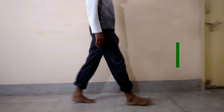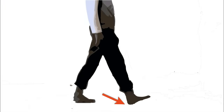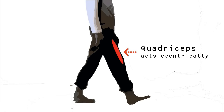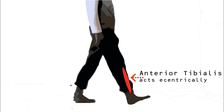Heel strike is the first component of stance phase, when the heel strikes the ground. During heel strike, there are two possibilities: due to the motion, there can be knee bending, and another possibility is slapping of the foot. To maintain the amount of knee flexion, the quadriceps muscles come into action and contract eccentrically. To prevent slapping of the foot, the tibialis anterior muscles contract eccentrically.